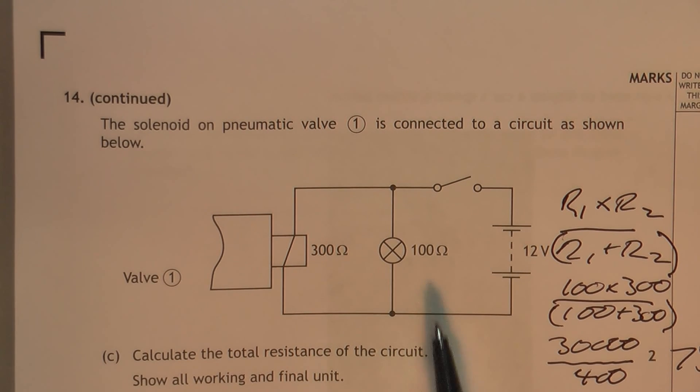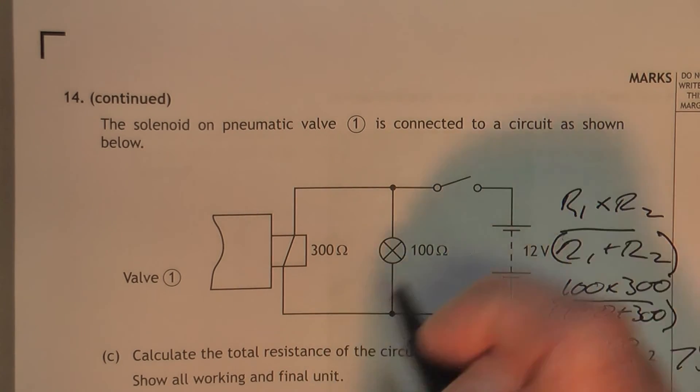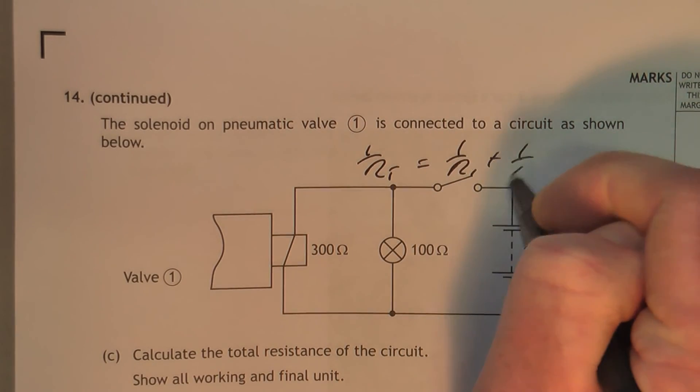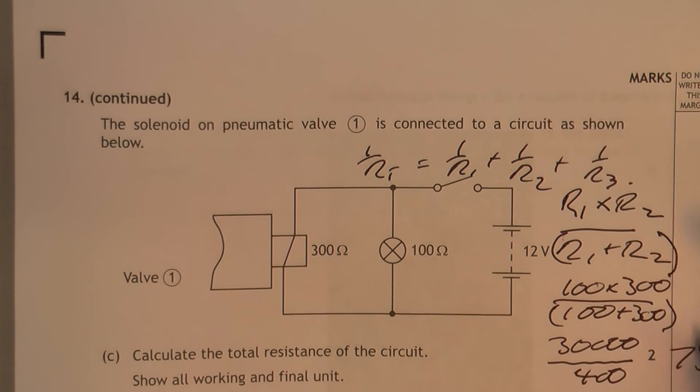The other way to do it, use your calculator. 100 x to minus 1 plus 300 x to minus 1 equals and then x to minus 1 again and then equals. That's using the 1 over RT equals 1 over R1 plus 1 over R2 however many there are.